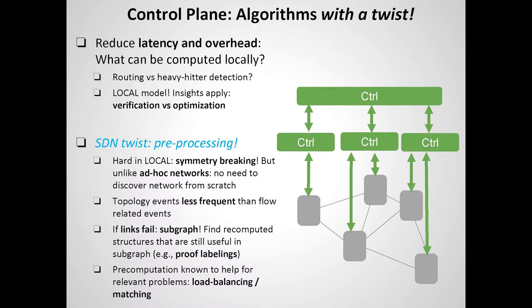On the control plane, another interesting challenge is that the SDN network will scale out over time, and if you want an available and efficient control plane you need to make it distributed. The question of what events can be handled locally, what functions can be computed locally, and what requires a global network state is very related to classical problems in distributed computing — the so-called local model. In SDN, topological events are much less frequent than flow events, so pre-computation is possible.